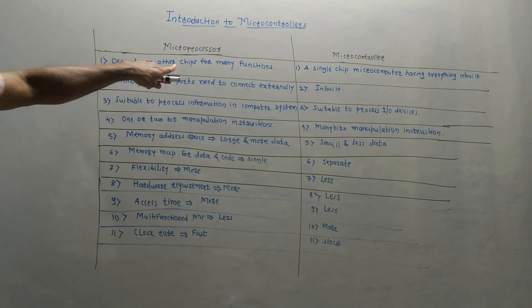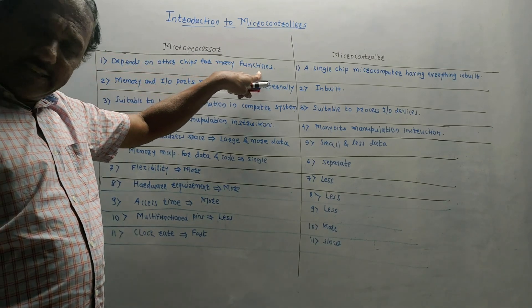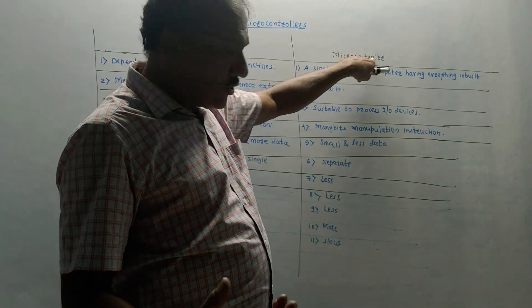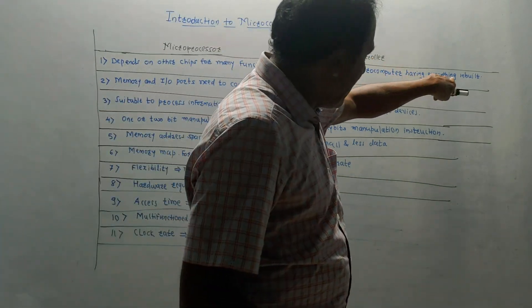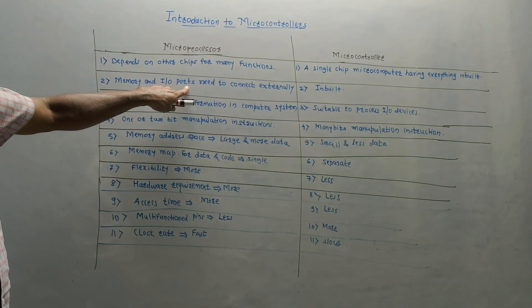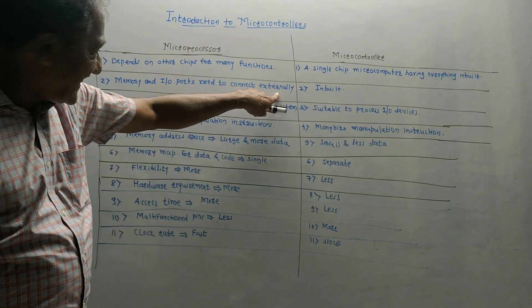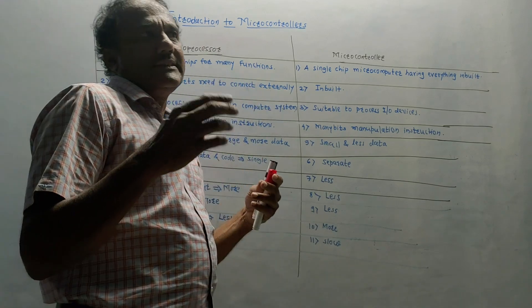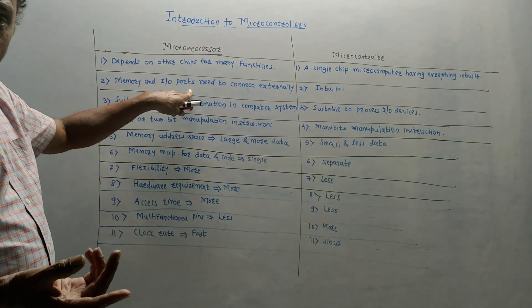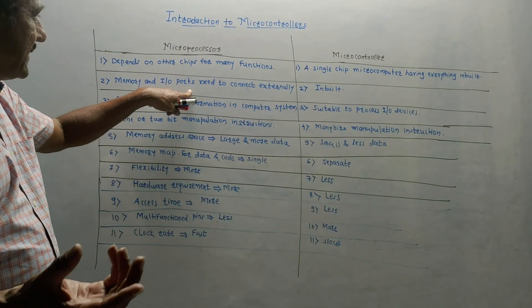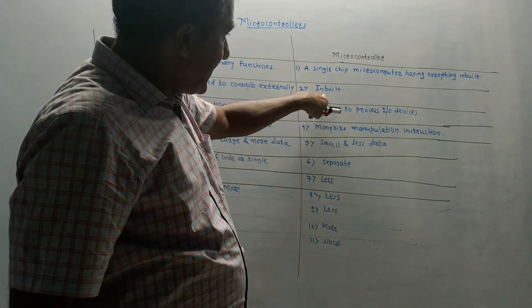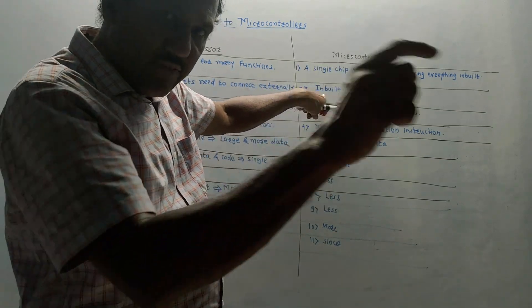Microprocessor depends on other chips for many functions. Whereas, microcontroller is a single chip having everything inbuilt. Memory and input-output ports need to be connected externally for microprocessor — for example, RAM, ROM, EEPROM, and input/output devices like keyboards and displays. Whereas, in the case of microcontroller, everything is inbuilt.